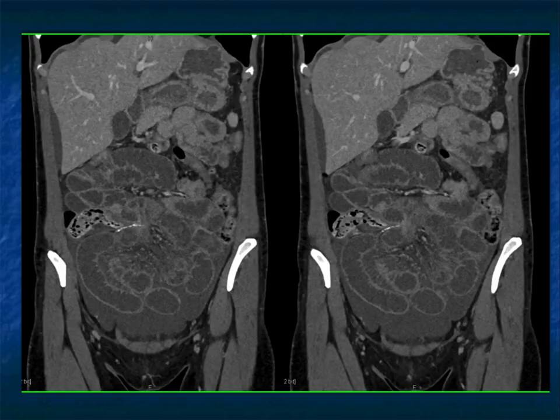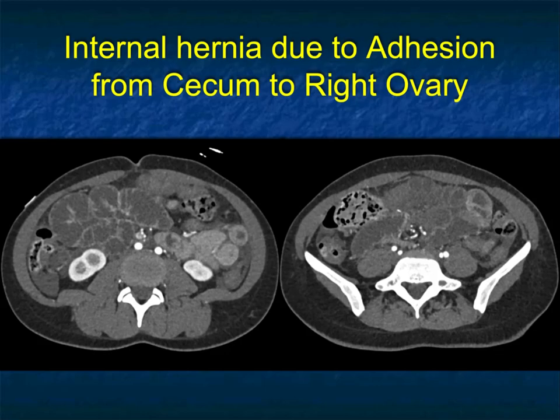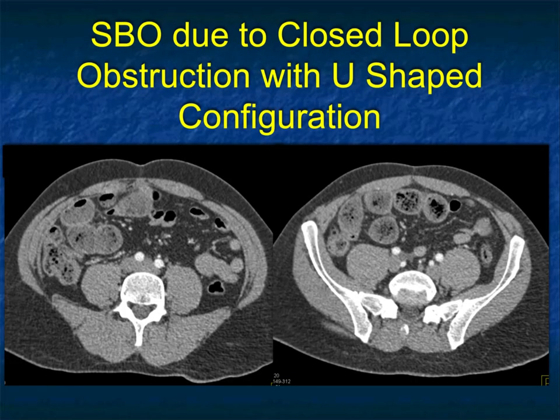In this case, it was an internal hernia due to adhesions from the cecum to the right ovary. What happens is patients with surgery — whether it's bowel or GYN — get a band, and the band causes this adhesion. Then you can have bowel twisting around the band. In this case, you couldn't quite figure out what the issue was; you knew there probably was a band present just by the appearance, but that was the diagnosis.